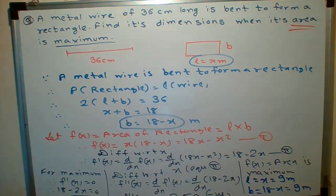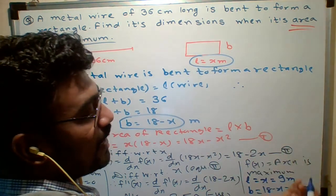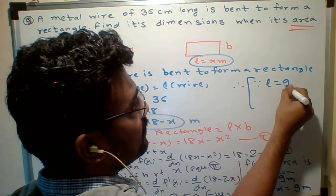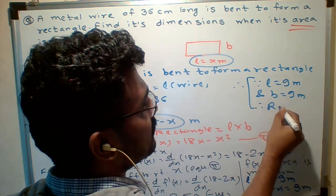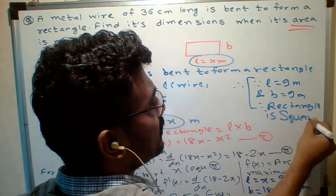So, length be breadth. Breadth be 9. Length be 9. Breadth be 9. Since length is 9 meter and breadth is also 9 meter. Therefore, sometimes they ask, show that the rectangle is square. Therefore, rectangle is what? Square.